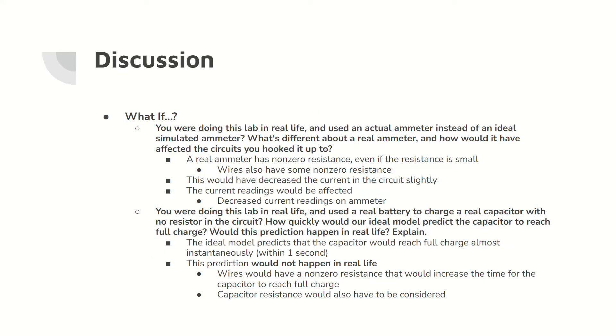A real ammeter has a small non-zero resistance. Therefore, if this investigation was conducted with a real circuit, the ammeter would read a slightly lower current value due to resistance from the ammeter and the wires.